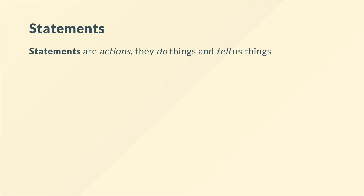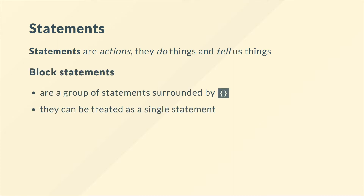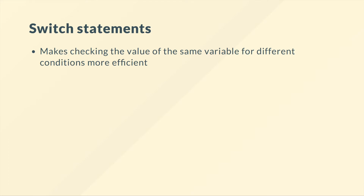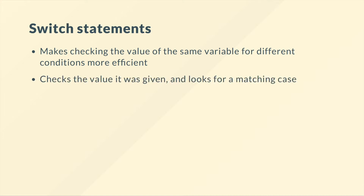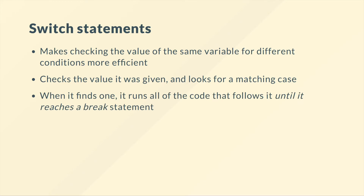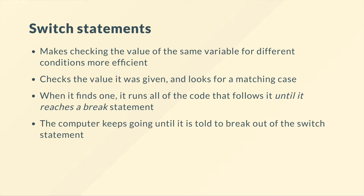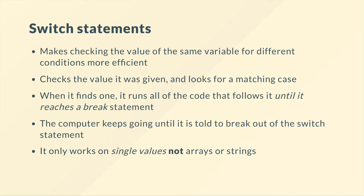Now we'll talk about statements — statements are actions that do things and tell us things. One type is a block statement: these are groups of statements surrounded with braces, and we can treat them as a single statement. We've also got switch statements, which are a combination of block statements and conditionals. They make checking the value of the same variable for different conditions more efficient than using if statements. The switch checks the given value and looks for a matching case — when it finds one, it runs all the code that follows until it reaches a break statement. It only works on single values like integers, chars, or floats — not strings or arrays.